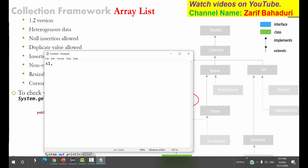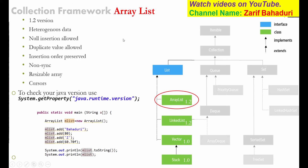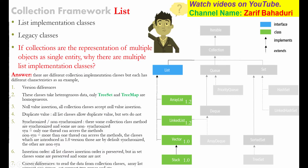For example, if your data entry is student1, student2, student3, student4, it will be preserved in the same order. If you have an insertion order, it will be preserved. But some classes preserve order and some do not. For example, some Set classes may not preserve insertion order.